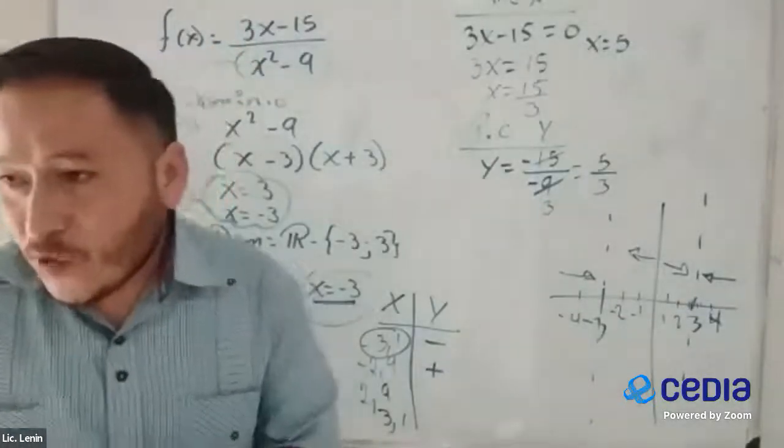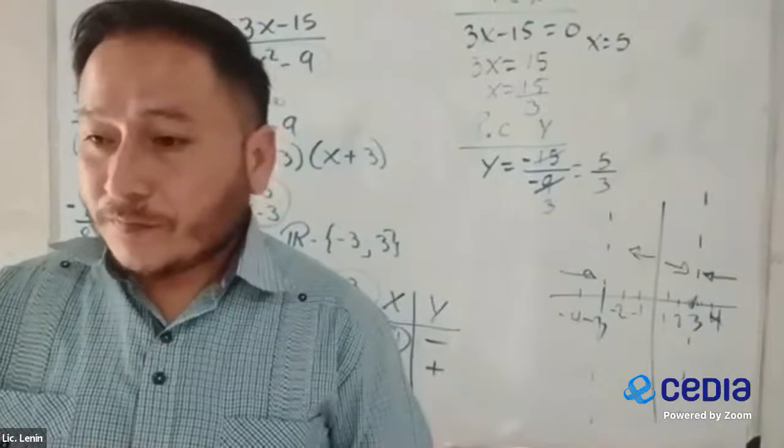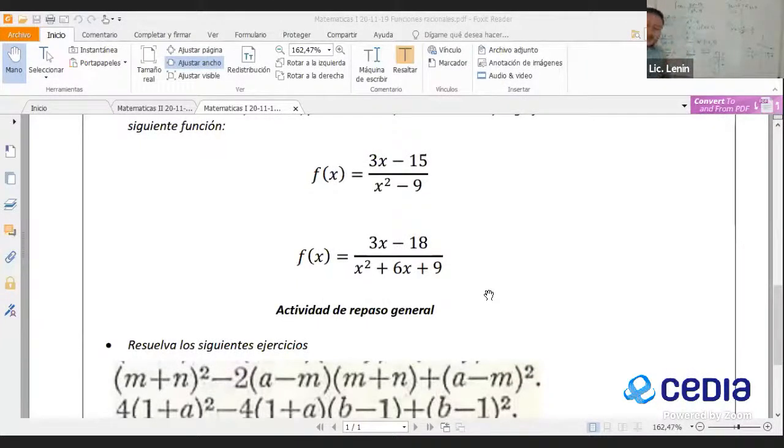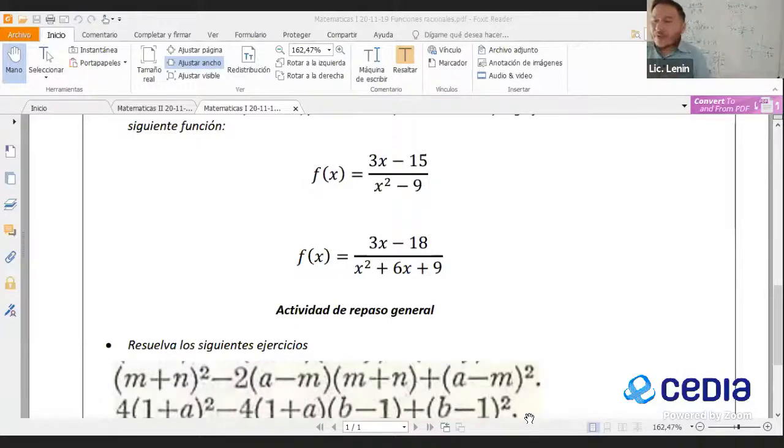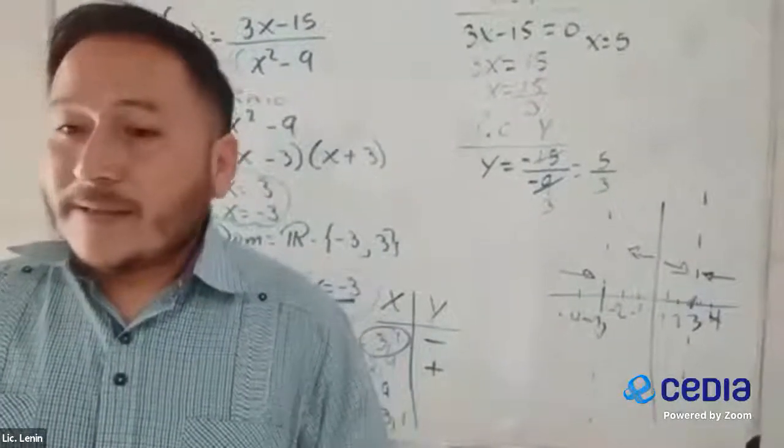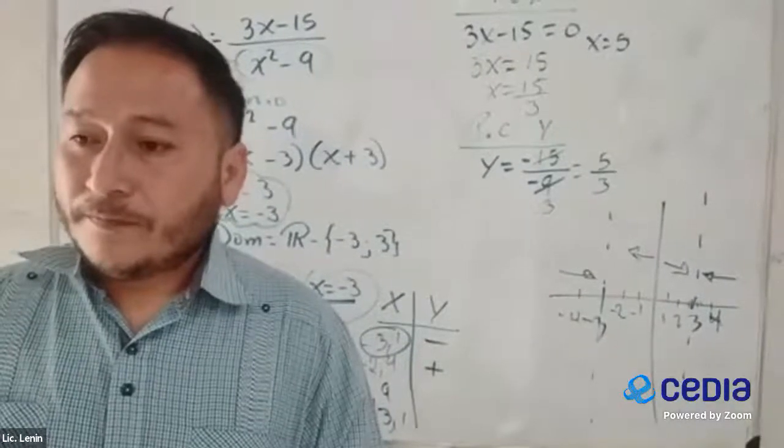Chicos, no quiero quitarles mucho tiempo, quiero que trabajen la actividad, el ejercicio, el segundo que tenemos ahí de nuestra función racional. Vamos a encontrar el dominio, asíntota vertical, asíntota horizontal, punto de corte en X, punto de corte en Y, y esa actividad me la envían hasta ahí. La gráfica de los dos ejercicios lo hacemos mañana. Porque no tenemos ninguna actividad en clase sobre este tema. En este momento voy a dejar de grabar y ustedes sigan trabajando y me van enviando sus actividades.